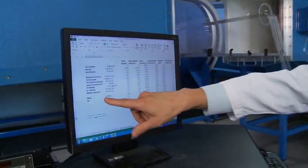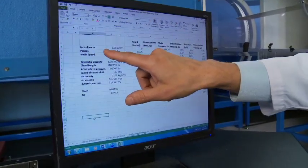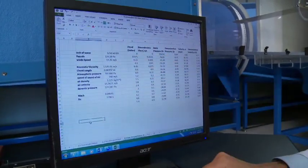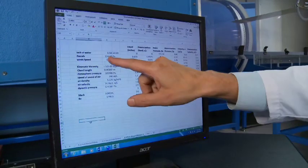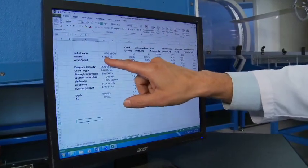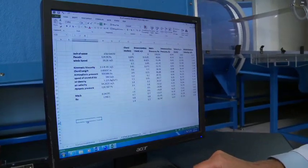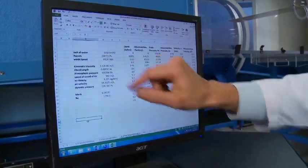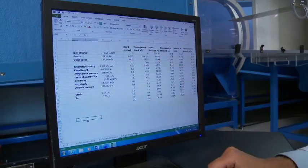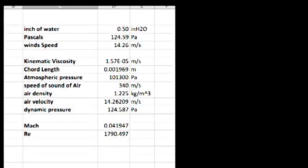Here's some preliminaries here. This is the inches of water that we measured while we were taking data, about 0.5 inches of water. I've converted that from inches of water to Pascals. So this is the dynamic pressure from the pitostatic tube. And then converting that from pressure to wind speed is about 14 meters per second.